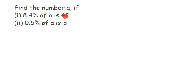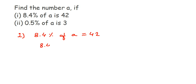I'm going to explain how to frame it and solve it. They have given 'a' — sometimes they give some other variable. So let's write down the first question: 8.4% of a is equal to 42. Percentage means per hundred, so 8.4% becomes 8.4 out of 100. Whenever you see a percentage sign, remove it and divide by 100. 'Of' means multiplication, so we write: (8.4/100) × a = 42.